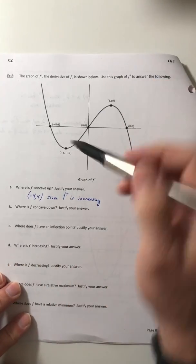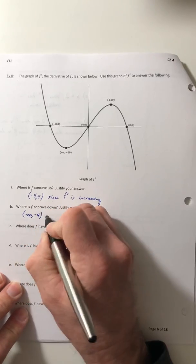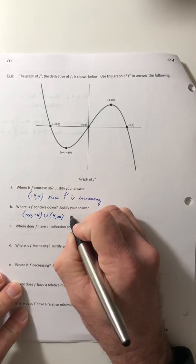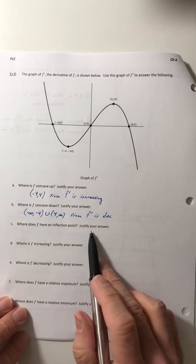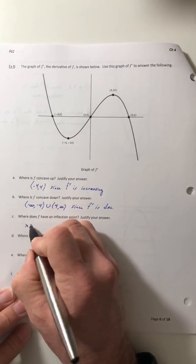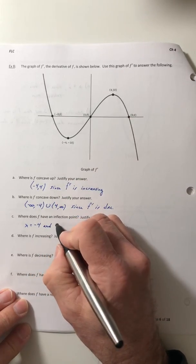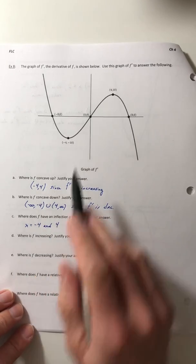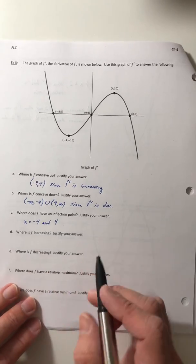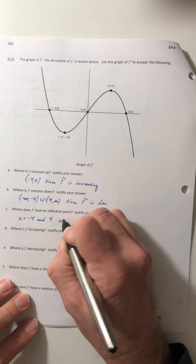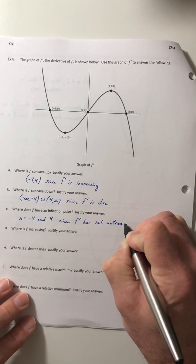Where is F concave down? Look for where the graph is going down — so negative infinity to negative 4, since F prime is decreasing. Where does it have an inflection point? That would be at the relative extrema: x equals negative 4 and x equals 4. You can only give the x values — don't give a y value, because these are points on the derivative graph, not the function. Justify: since F prime has relative extrema.